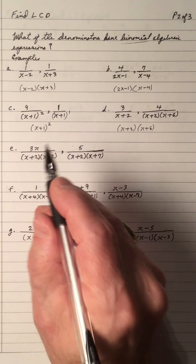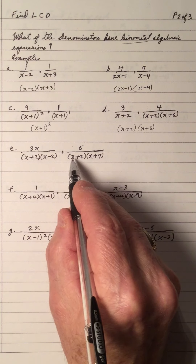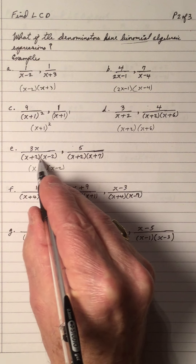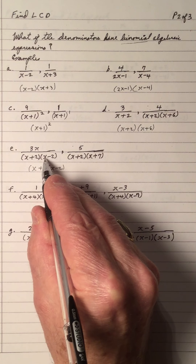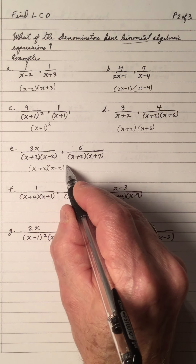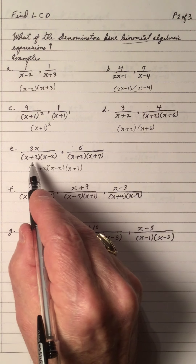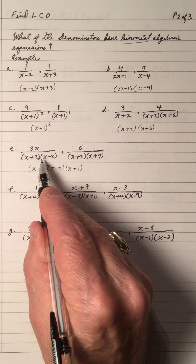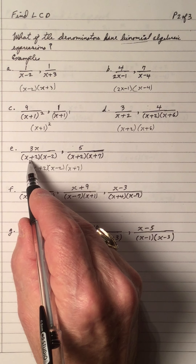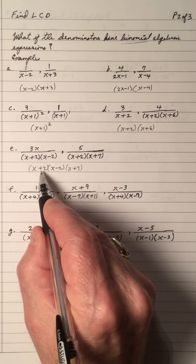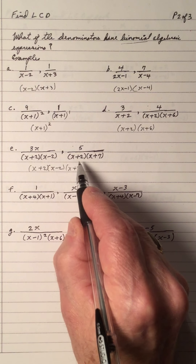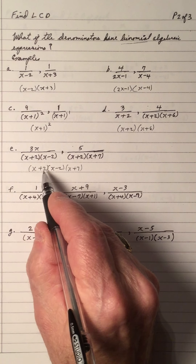Example E: I take the first fraction and write down its denominator factors. Then I look at the second fraction and ask what's in this one that's not already listed. I see an (x plus 7). So for these two fractions, I need an (x plus 2), an (x minus 2), and an (x plus 7). Both denominators are fully represented in this LCD.